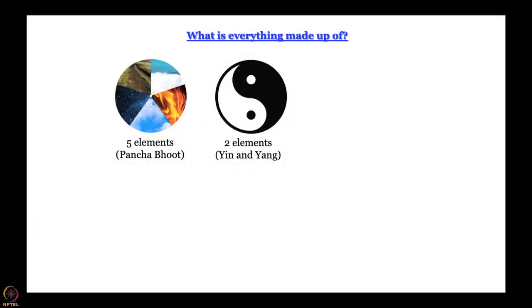In ancient India the answer was that everything is made up of five elements — panchabhutas, as we call them. In ancient China it was believed that everything is made up of two elements: yin and yang — two opposing forces, up and down, man and woman, good and bad, and so on. What they believed is that the synthesis or coming together of two opposing forces makes everything up. Even in our modern way, five elements and two elements are things that make sense. But our knowledge has progressed: as far as chemistry is concerned there are many elements, and they come together to form more complicated compounds — that forms the basis of chemistry.